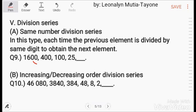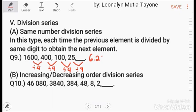In this example, each term is divided by 4. So 25 divided by 4 equals 6.25.